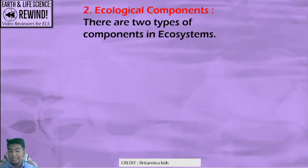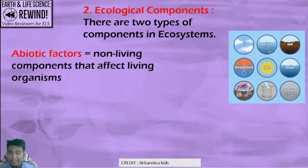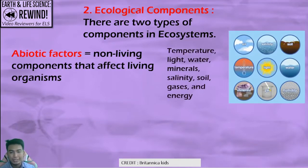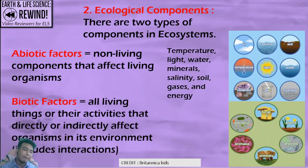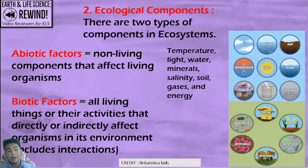There are two types of ecosystem components. Abiotic factors are the non-living components — things like temperature, light, water, minerals, gases, and energy itself are part of the ecosystem. Biotic factors are related to living things and their activities and are directly part of the biotic factors.